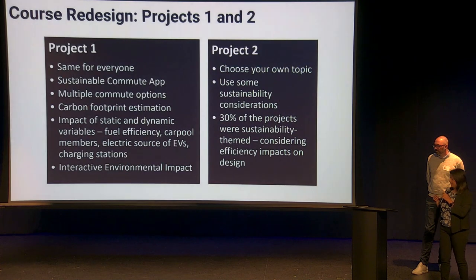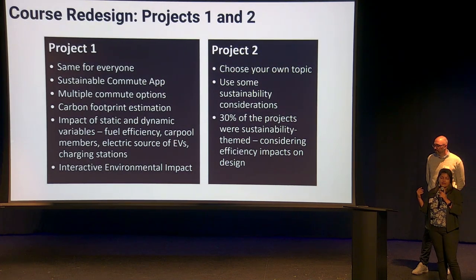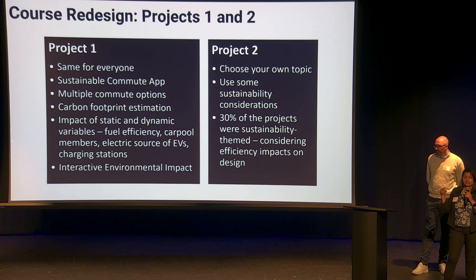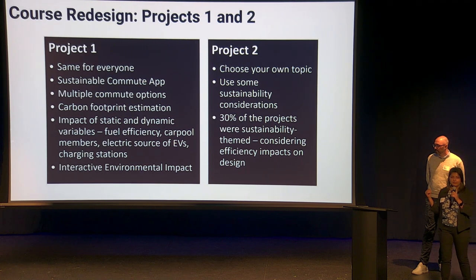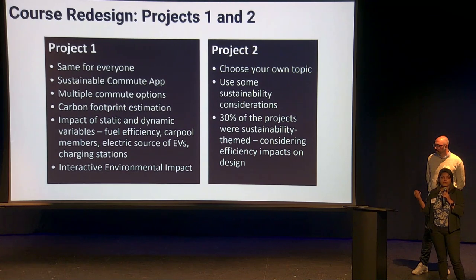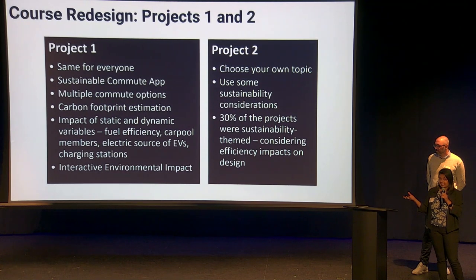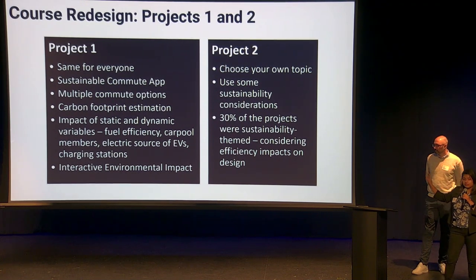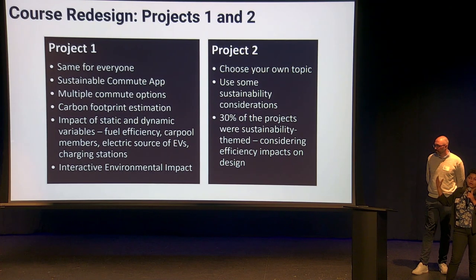In project one, students create a sustainable commute app, focusing on social and environmental implications and considering variables like fuel efficiency or the distribution of charging stations. In project two, they focus on deployment and scalability of the app and how that affects sustainability.